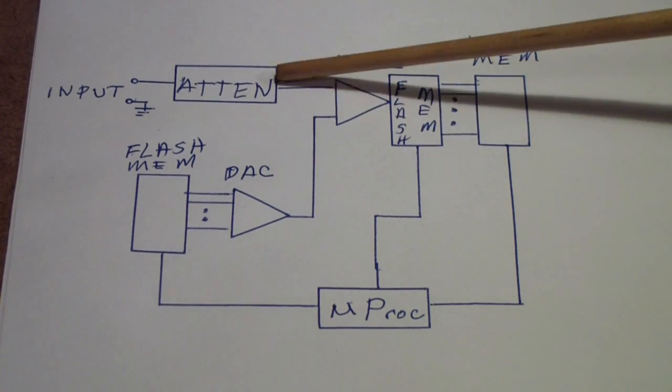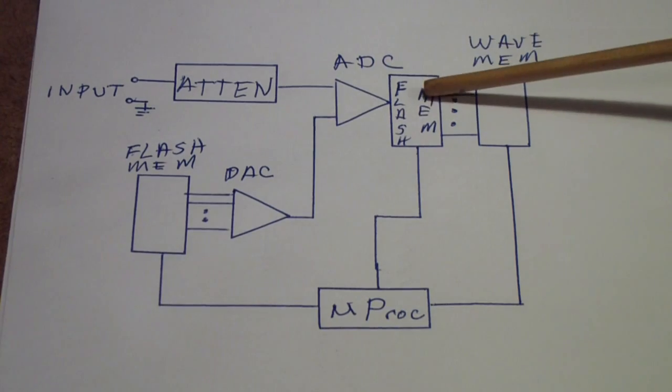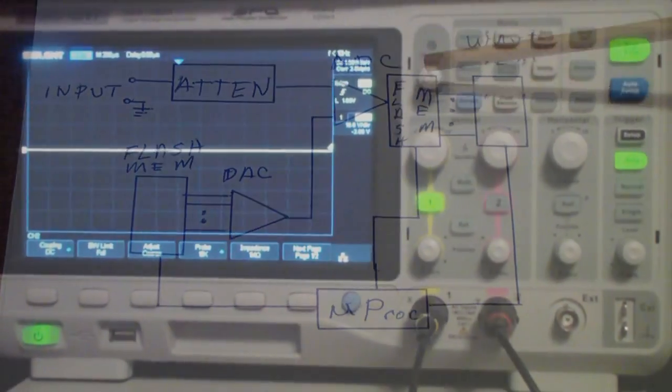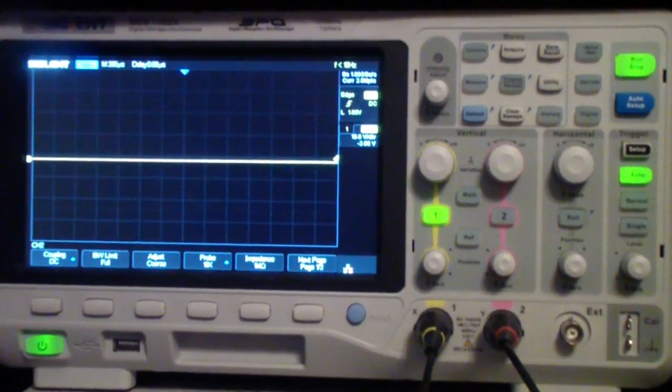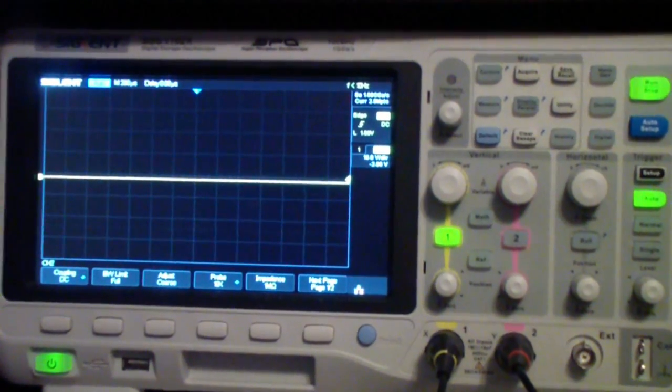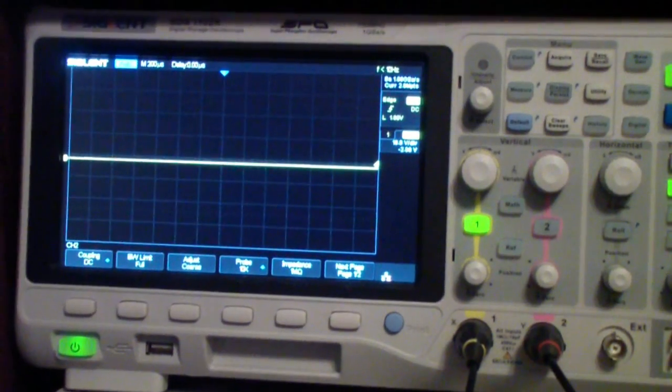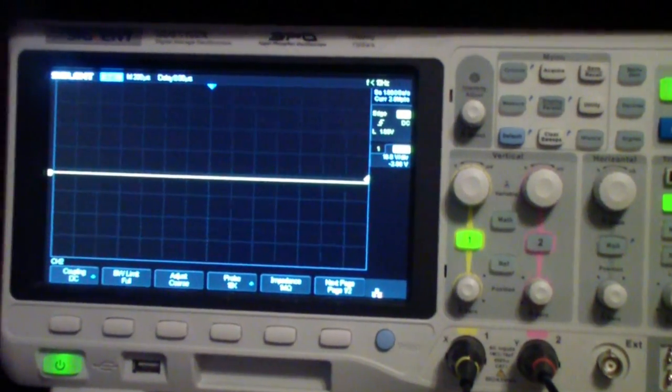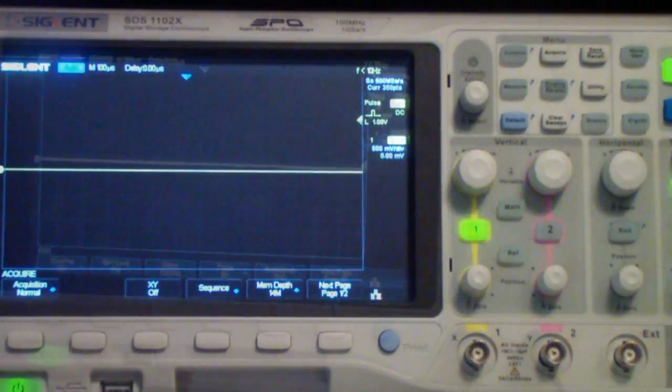Now, of course, once again, as things change over time, you have to recalibrate because the values in the flash memory have to change. So let's look at how we might calibrate a modern digital oscilloscope like this Siglent SDS1102X that I previously compared to the Rigol.